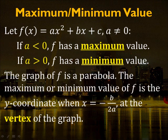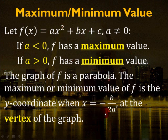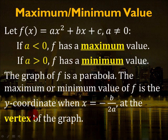The maximum or minimum value of f is the y-coordinate at x = -b/(2a), which is the vertex of the graph. When you plug -b/(2a) into the function written in general form, you get the x-coordinate of the vertex. Plug that x value back into the function to get the y-coordinate. Together they represent the vertex.